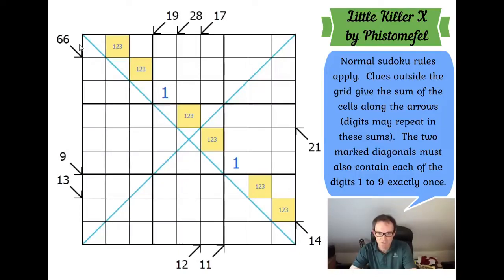So this 66 clue is going to work the same way, isn't it? So if I can only put 2 9s and 2 8s along it, then I could have 9 8 7 twice, so that's 24, 48, plus 2 lots of 9 is 66.